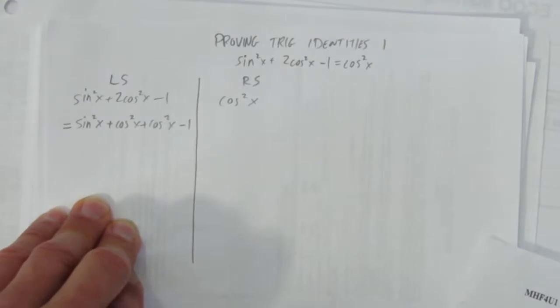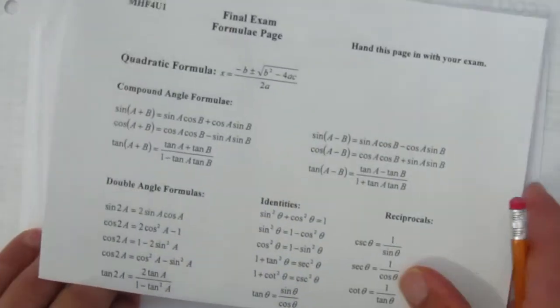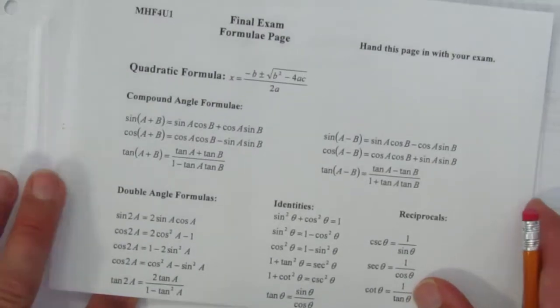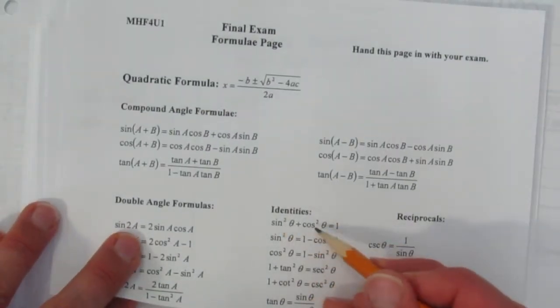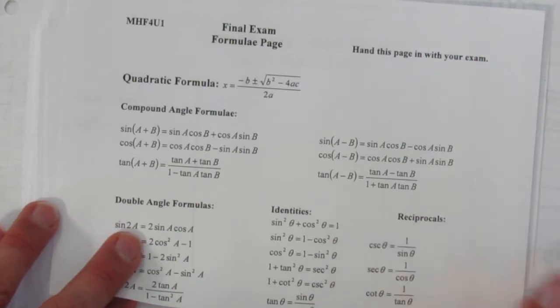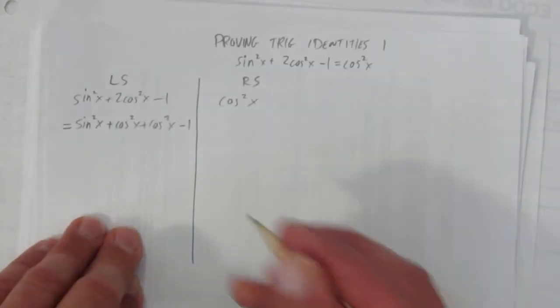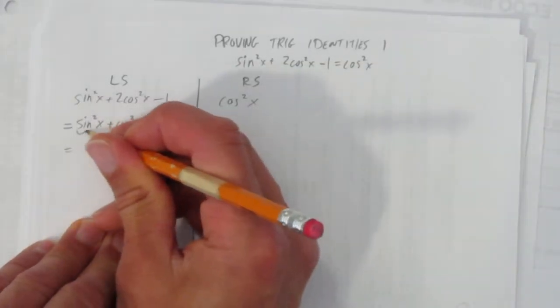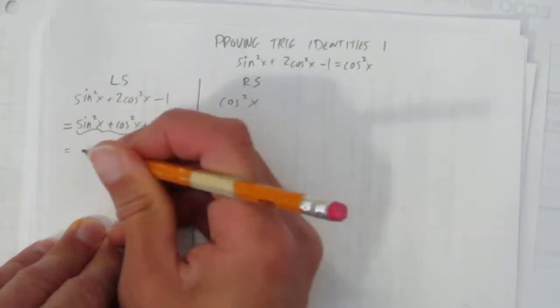Why is that good? Because we have a formula, sin²x plus cos²x. Look on your formula sheet. What's sin²x plus cos²x? It's over here. Sin²x plus cos²x equals 1. So using that formula or identity, you can replace all of this sin²x plus cos²x with just a 1.